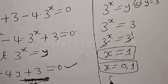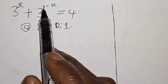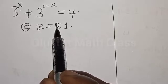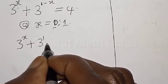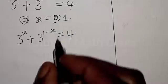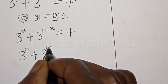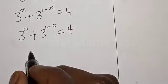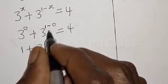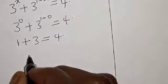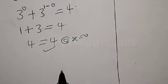Therefore our final answers are x equals 0 and x equals 1. Let's check to confirm. The original equation is 3 raised to power x plus 3 raised to power 1 minus x must equal 4. At x equals 0: we have 3 raised to power 0 plus 3 raised to power 1 minus 0, which is 1 plus 3, which equals 4. We satisfy the given equation at x equals 0.